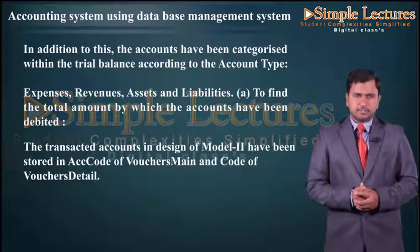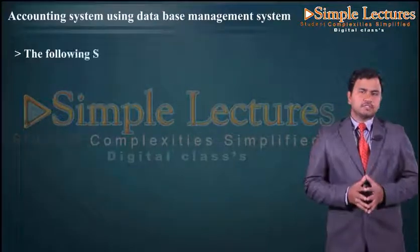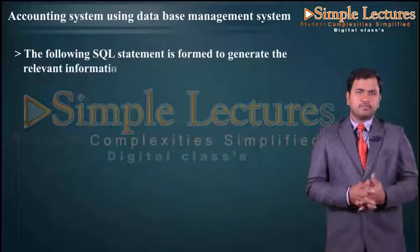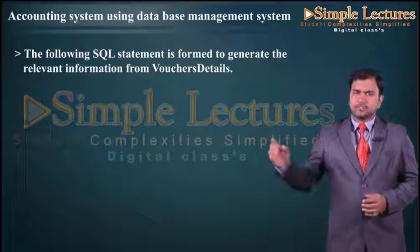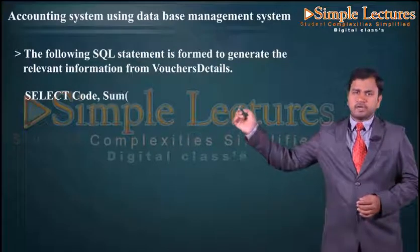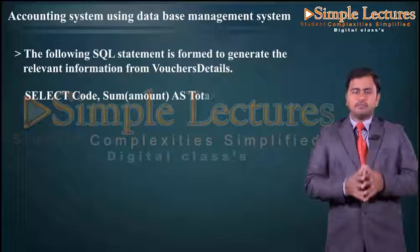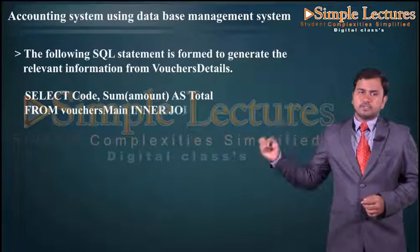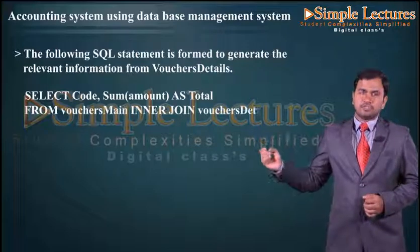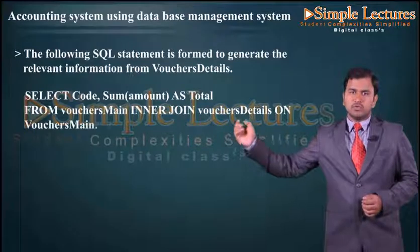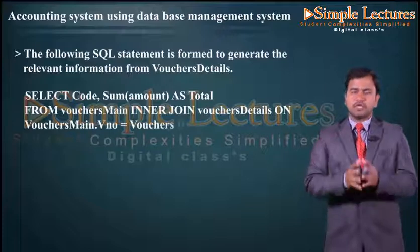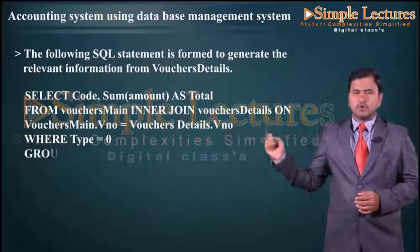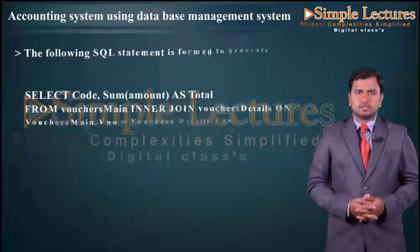The following SQL statement is formed to generate relevant information from voucher_details: SELECT code, SUM(amount) AS total FROM voucher_main INNER JOIN voucher_details ON voucher_main.voucher_number = voucher_details.voucher_number WHERE type = 0 GROUP BY code.